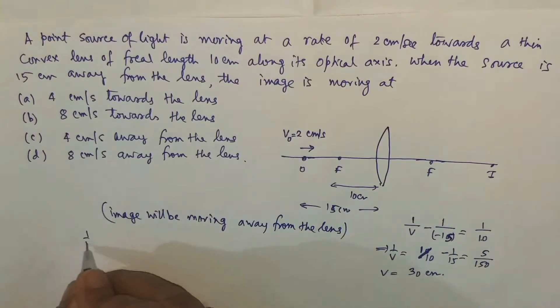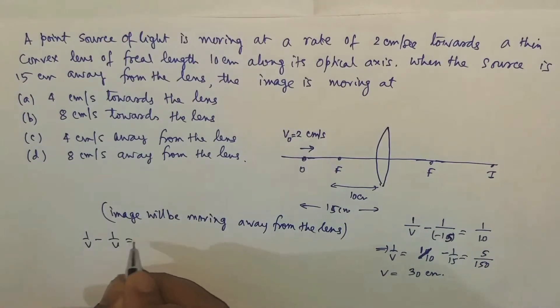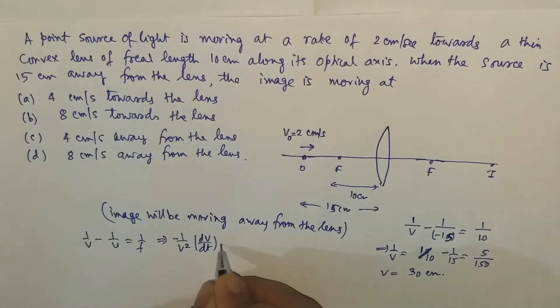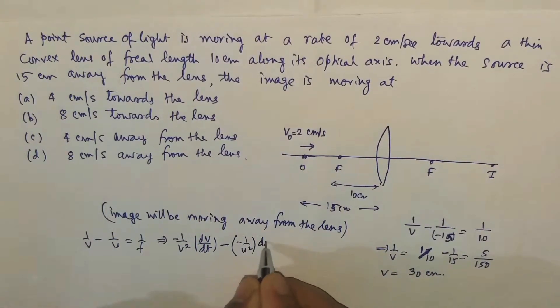Now you have to differentiate that: 1/v - 1/u = 1/f. So I differentiate: -1/v² dv/dt - (-1/u² du/dt) = 0.